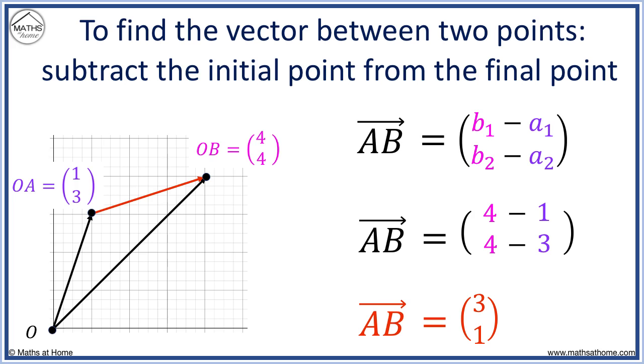We can see that the red vector in the diagram goes 3 along, 1 up.